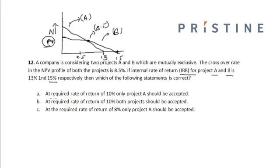So let us first try to look at the options. At the required rate of return of 10%, only project A should be accepted. We divide the entire region into two parts, one for which the required rate is greater than 8.5%, which will lie ahead of this line. So in this case, since 10% lies in this case, at whatever discount rate we take, project B has higher NPV than project A. So at the required rate of 10%, project B should be selected, not project A.